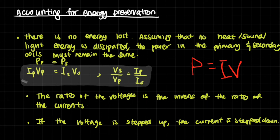Rearranging gives VS over VP equals IP over IS. This means the ratio of voltages is the inverse of the ratio of currents. In other words, if the voltage is stepped up, the current is stepped down; if the current is stepped up, the voltage is stepped down. You cannot create power from nowhere: if you increase the voltage, the current must decrease so energy is not conjured up, and if you decrease the voltage, the current increases so energy is not magically lost.